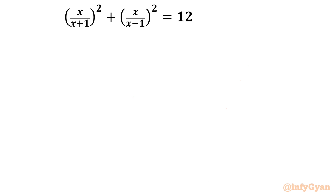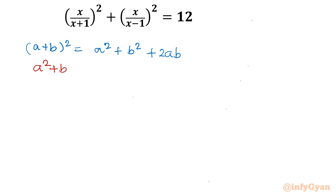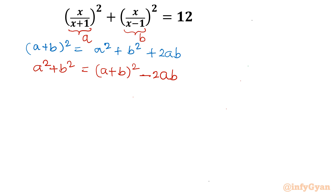Let's get started by writing one fundamental algebraic identity: (a+b)² = a² + b² + 2ab. From this, I can derive that a² + b² = (a+b)² − 2ab. So I will substitute the two fractions as a and b, using this a² + b² formation.